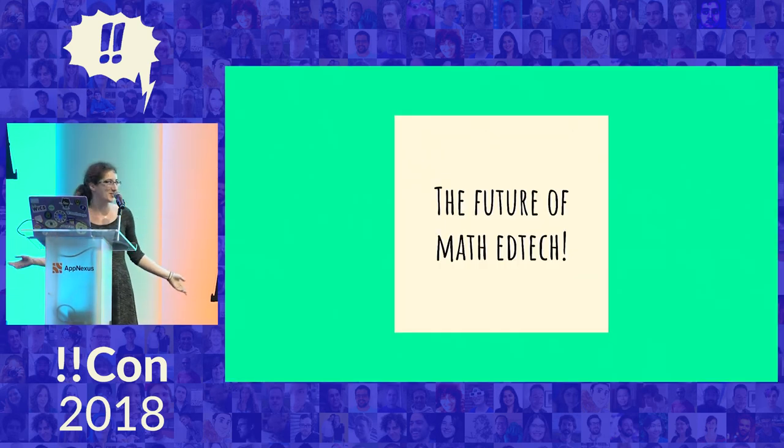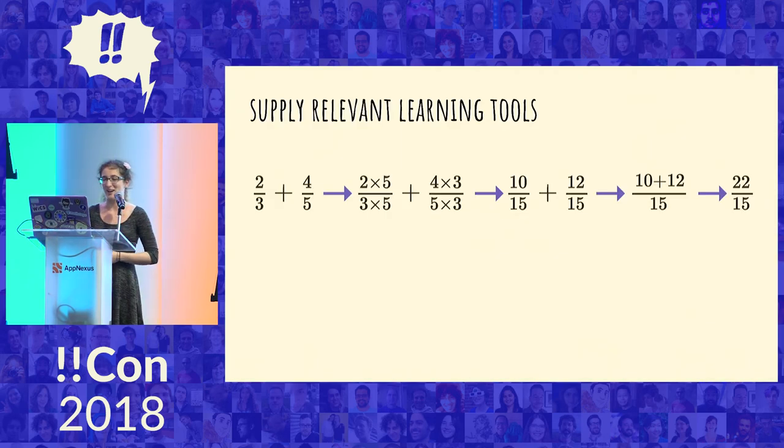There's also lots of really cool things you could do with something like math steps. For example, the algorithm, given like adding fractions together, the way it comes up with those steps is because it can tell that you're adding fractions together. It's like, oh, here are two fractions. Now we're gonna do the steps for adding fractions.